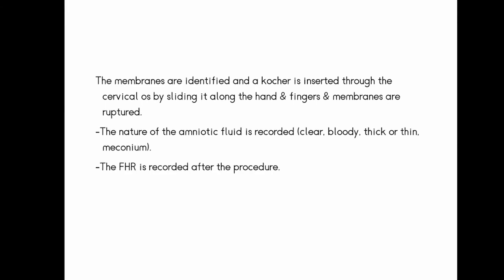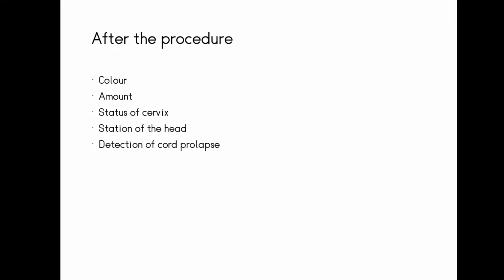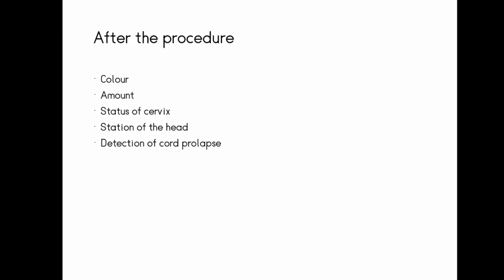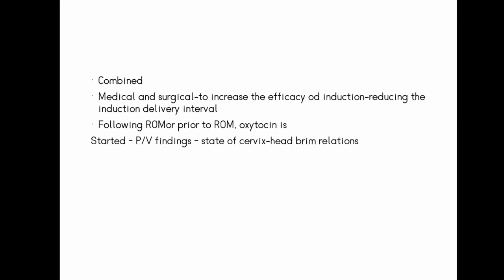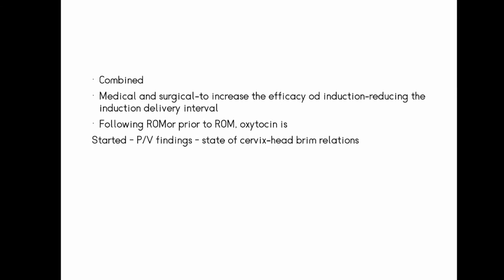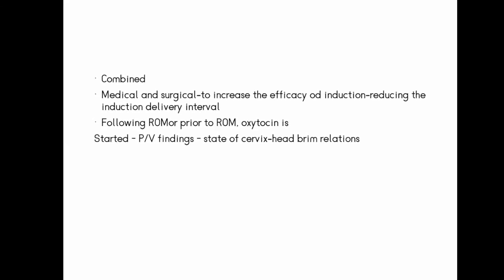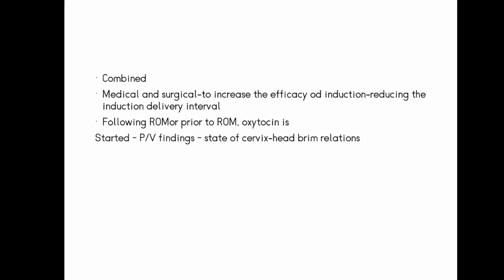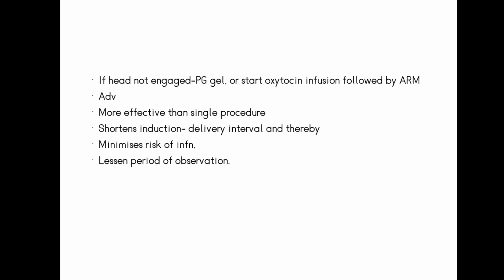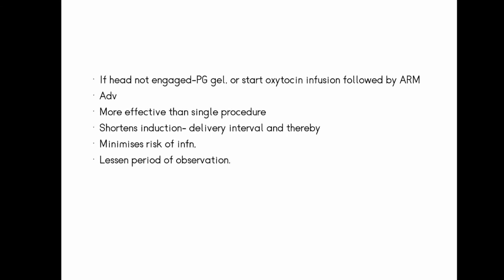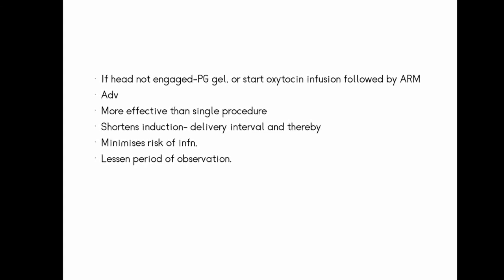During amniotomy, the fetal heart rate is checked before and after the procedure. A clamp is used carefully, and afterwards the amount of fluid and the presenting part are assessed. A cord prolapse must be detected. Combined medical and surgical methods improve the efficiency of induction and shorten the induction-to-delivery interval. Starting oxytocin and cervical ripening variations together minimizes the risk of infection.